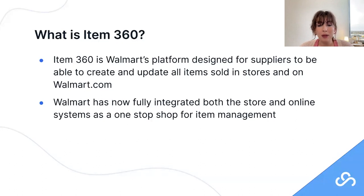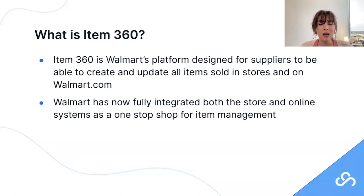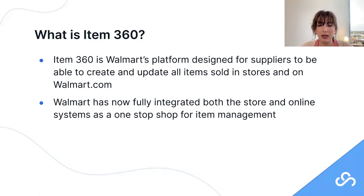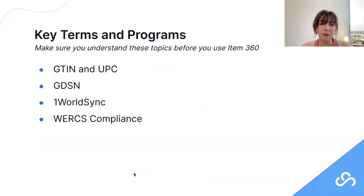So what is Item 360? Item 360 is a Walmart platform within Retail Link designed for suppliers to create and update items sold in stores and on Walmart.com. Before you start executing in Item 360, make sure what you're trying to do is supported by the platform. Walmart has now fully integrated the store and online systems into a one-stop shop for item management. You can check Walmart help docs within Retail Link — they're also available via Google.